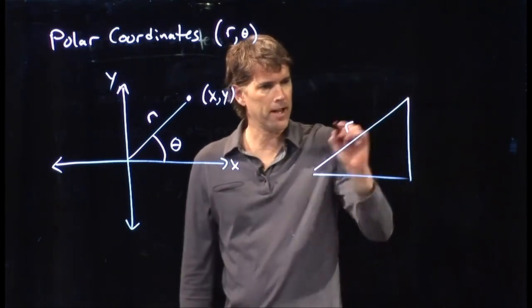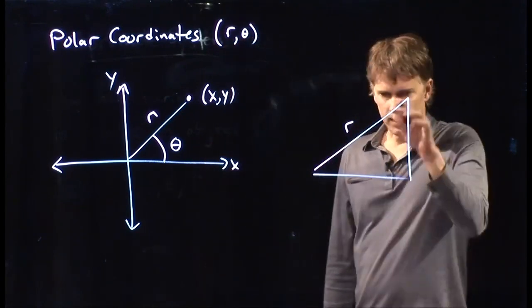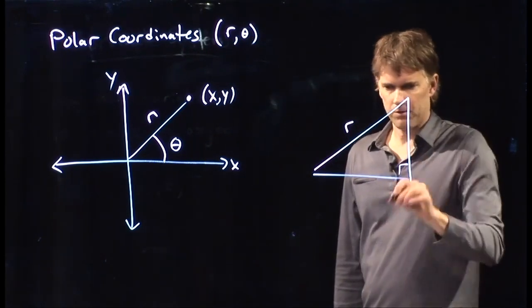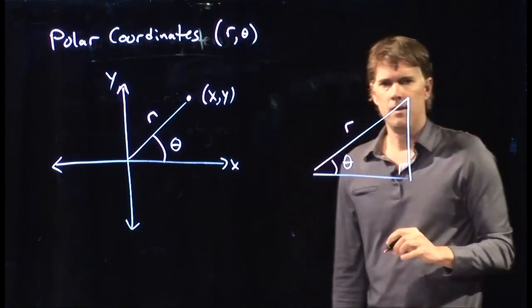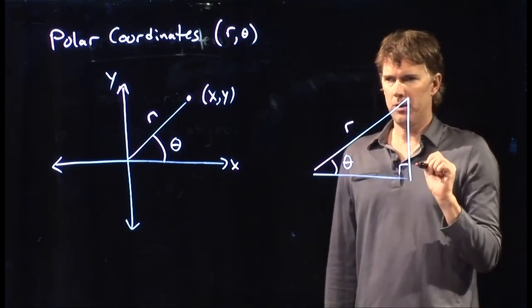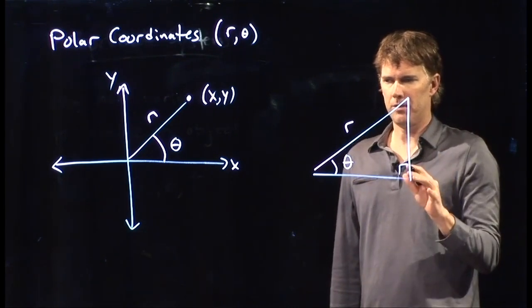So if I draw that line again, I complete the triangle, make this a right angle, and this is theta, then that xy coordinate up there corresponds to what?